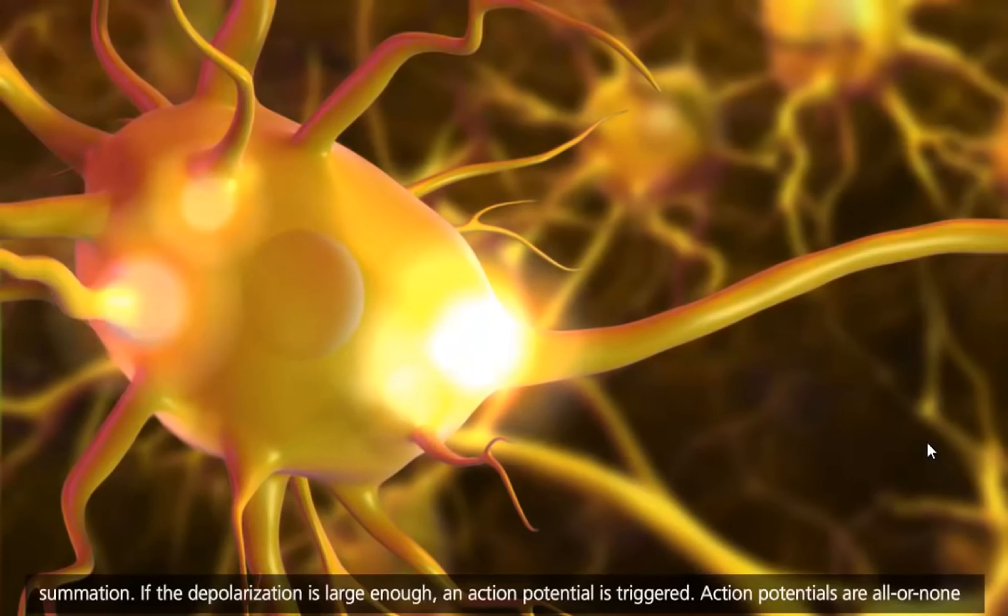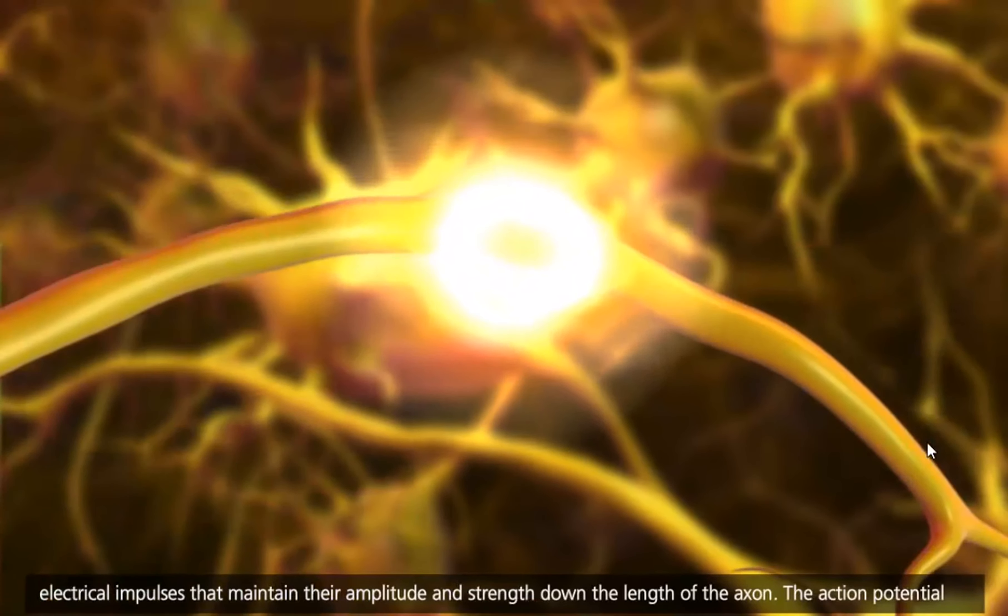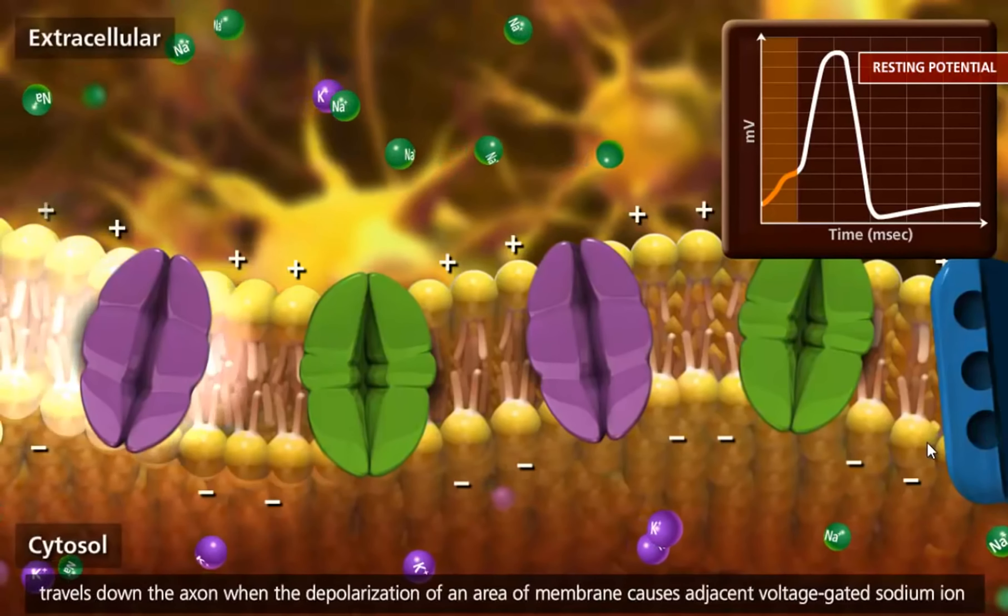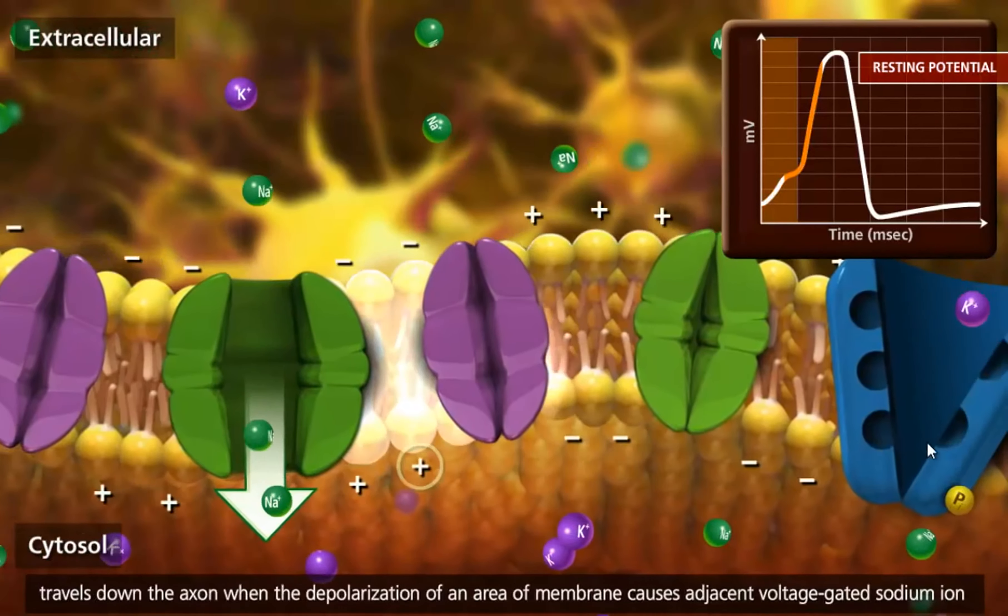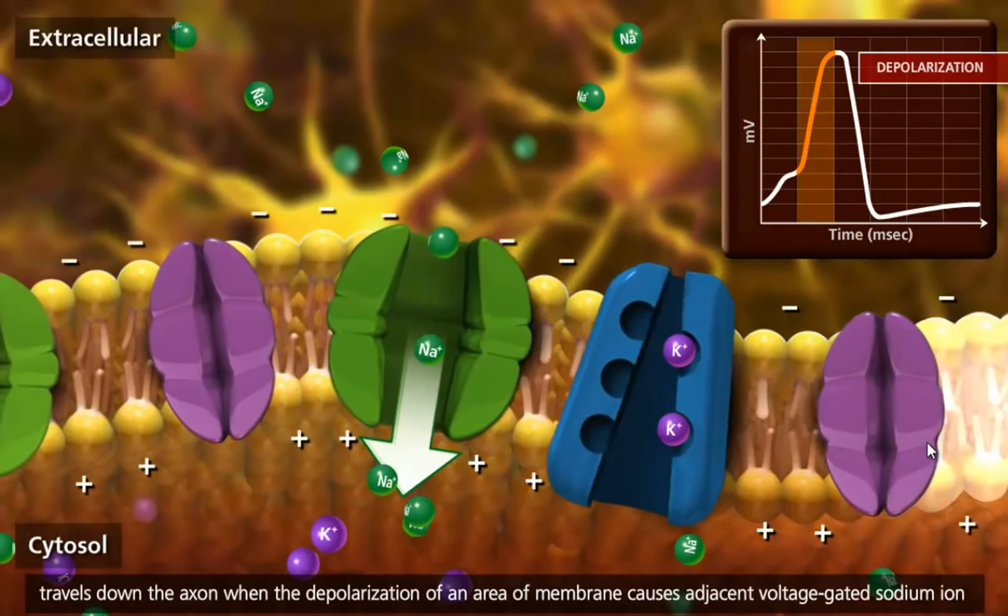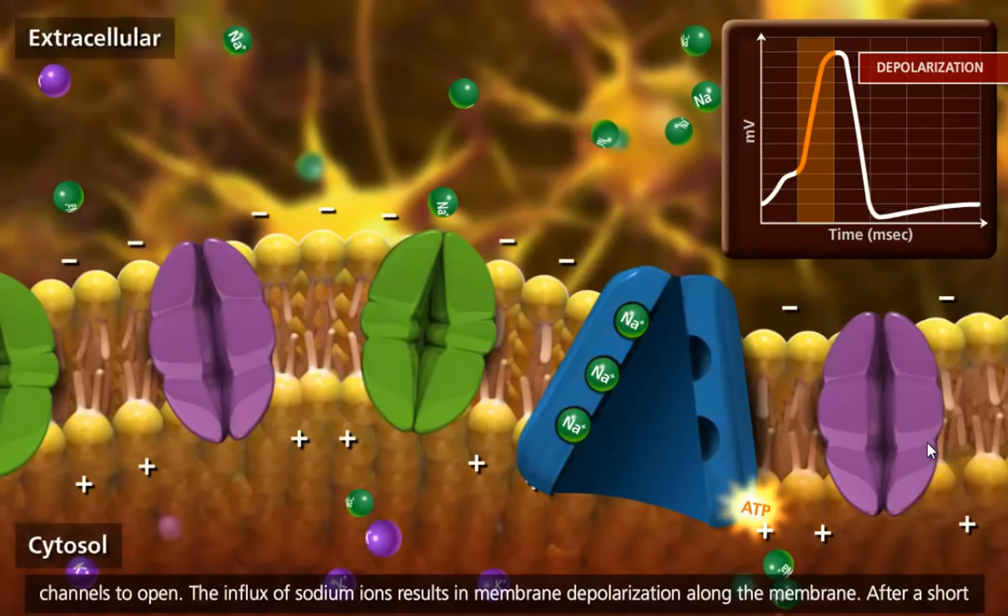Action potentials are all-or-none electrical impulses that maintain their amplitude and strength down the length of the axon. The action potential travels down the axon when the depolarization of an area of membrane causes adjacent voltage-gated sodium ion channels to open. The influx of sodium ions results in membrane depolarization along the membrane.